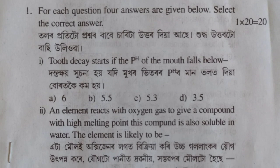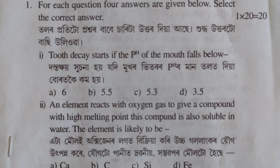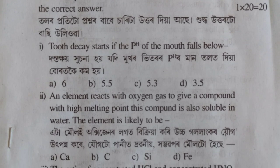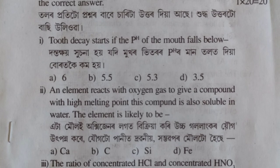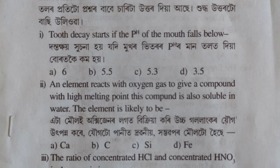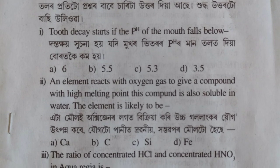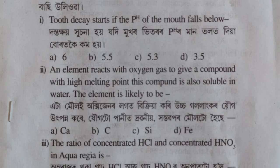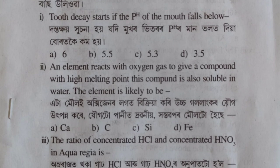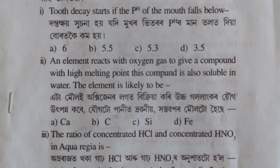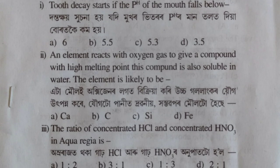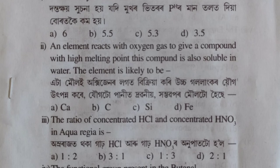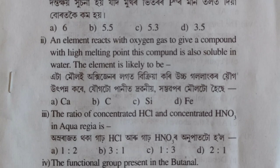An element reacts with oxygen gas to give a compound with high melting point. This compound is also soluble in water. The element is likely to be — the compound reacts with oxygen and forms a high-melting-point compound that is soluble in water. The correct option is option number B, C.